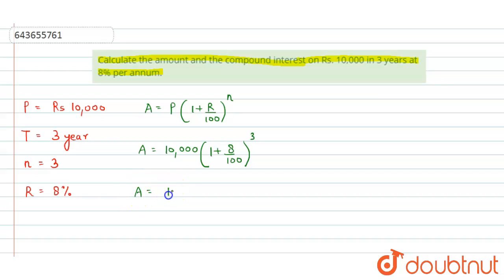Now, simplifying this bracket, we get Amount = 10,000(108/100)^3.